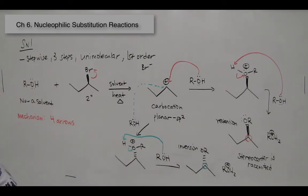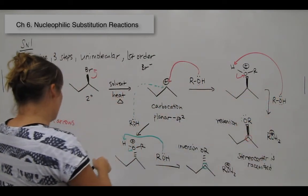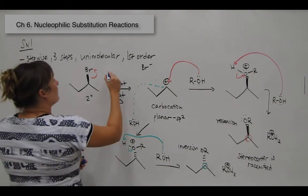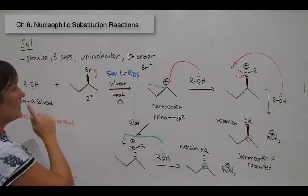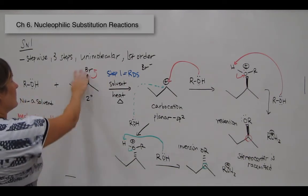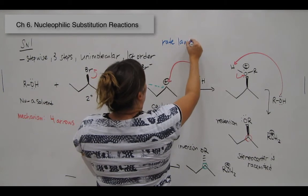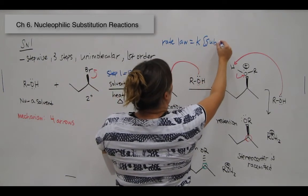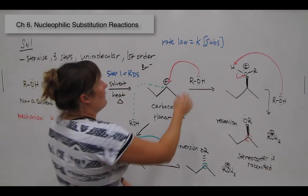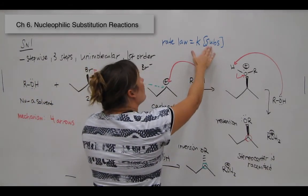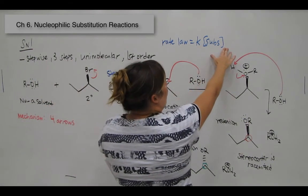SN1 occurs over three steps, and step one — the leaving group departing — is the slow, rate-determining step. Only the substrate is involved in that step, so the rate law is k times [substrate]. The nucleophile does not appear in the rate law: doubling the nucleophile concentration has no effect on rate, whereas doubling the substrate concentration doubles the rate.